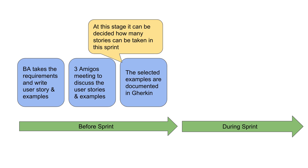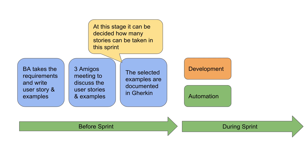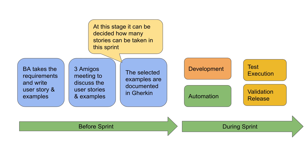At this stage, it can be decided which user stories should go into the sprint — based on the amount of work and the duration of the sprint, we can decide how many user stories to take. Then the sprint starts, where we take these documented examples or scenarios and do the process of automation, test creation, and development. After development is done, we have the test execution phase where tests are run, defects are fixed, and retesting and regression are done.